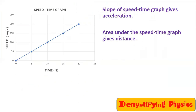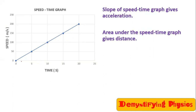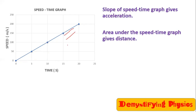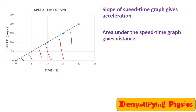From this graph you can find two things: acceleration and distance. The area under the speed-time graph gives distance. If asked for the distance in the first 10 seconds, find the area of this right triangle. If asked for the distance between 15 and 20 seconds, find just that area under the graph. For distance in 20 seconds, find the full right triangle area.